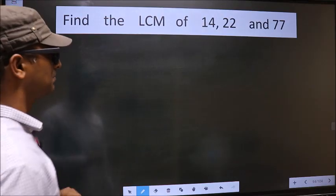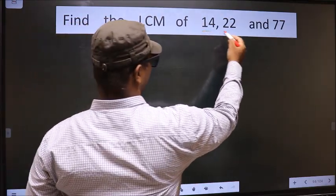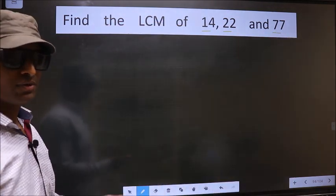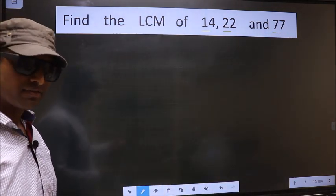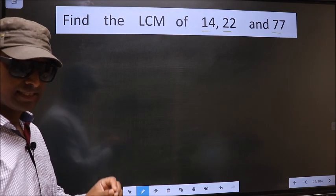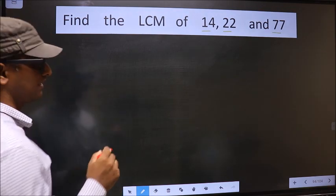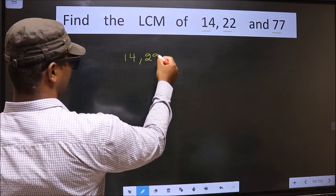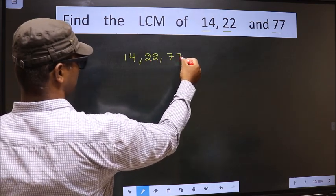Find the LCM of 14, 22 and 77. To find the LCM, first we should frame it in this way. See, that is 14, 22, 77.